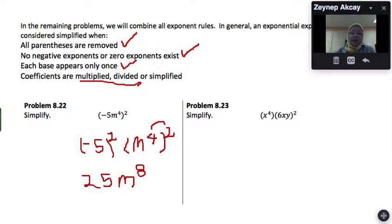Let's look at the next one. We will multiply x to the 4th by the square of 6xy. So we first need to find the square of 6xy.